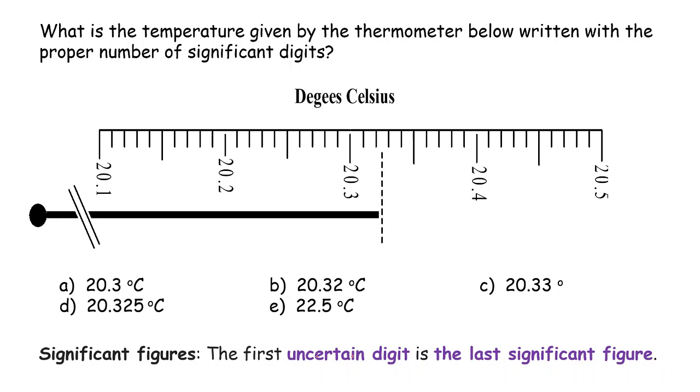So uncertain means you estimate. So it's not certain. So there are some errors there. If we look at those five different choices, there are three sig figs.